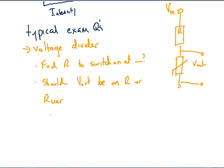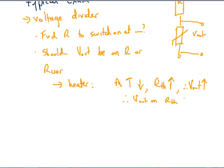So maybe let's look at two examples. As a heater, you want as temperature decreases, as R thermistor would increase, therefore Vout would also increase on the thermistor. Therefore Vout on R thermistor. This is probably something that you can put onto your cheat sheet just as a quick reference.